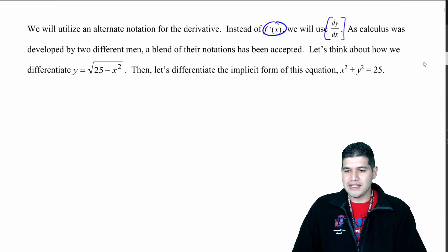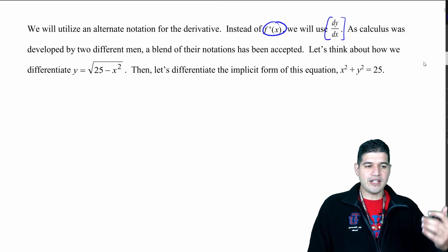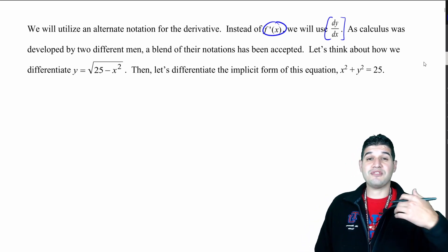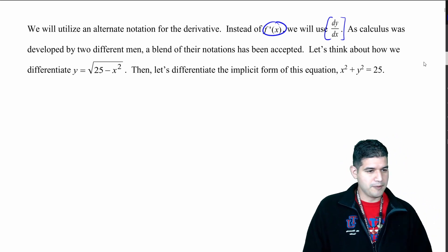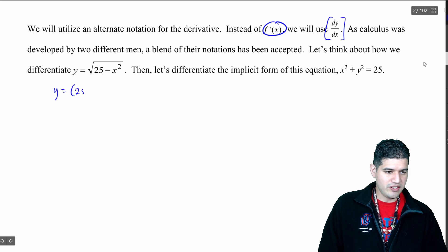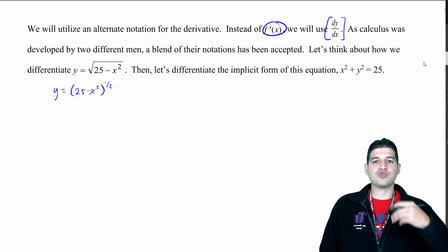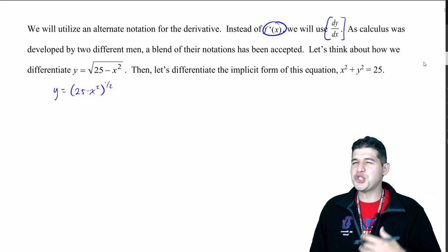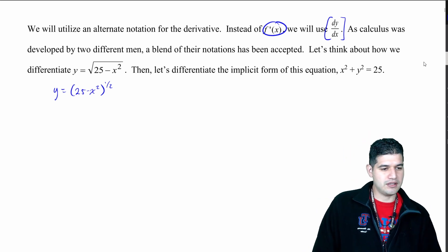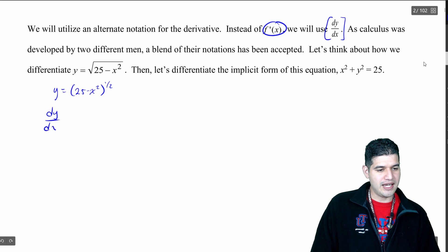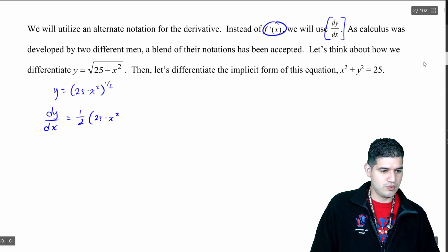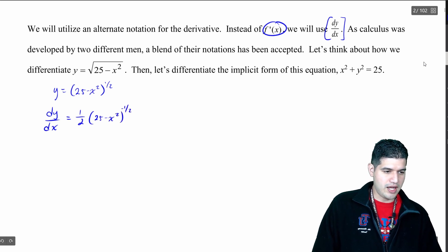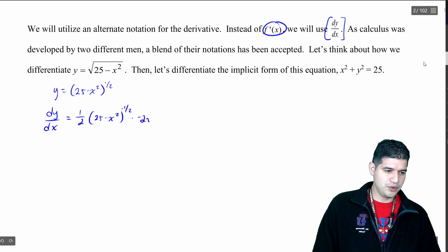For example, we're going to take this function y equals the square root of 25 minus x squared, and we're going to differentiate with respect to x. So let me rewrite this as y equals (25 minus x²) to the one-half. Then I'm going to take the derivative with respect to x. So we take the derivative of y with respect to x, and then we go one-half times (25 minus x²) to the negative one-half, and then we've got to take the derivative of the inside, which is multiplied by negative 2x.